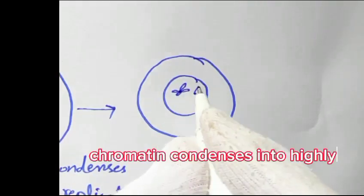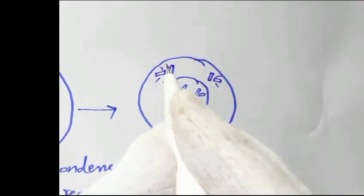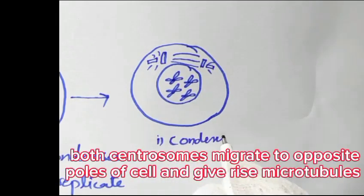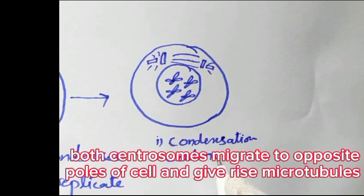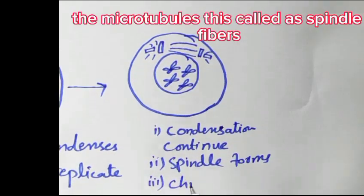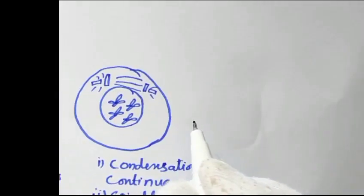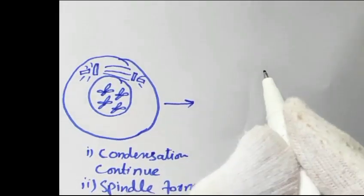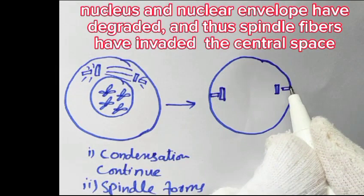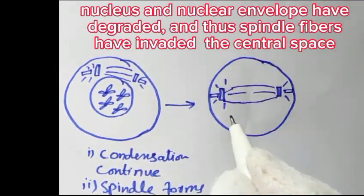Chromatin condenses into highly ordered structures called chromosomes. Both centrosomes migrate to opposite poles of the cell and give rise to microtubules, which are called spindle fibers. The nucleus and nuclear envelope have degraded, and thus spindle fibers have invaded the central space.